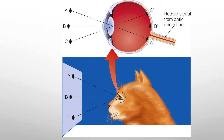What they would do is anesthetize the cat so that the eye is very still. Because we get this inverted and flipped image, if I'm shining a light up at A, it's going to be hitting the retina down at A prime. If I'm shining a light straight forward at B, it's going to be hitting B prime. And if I'm shining a light down at C, it's going to be hitting up at C prime — that inverted and flipped image on the back of the retina.